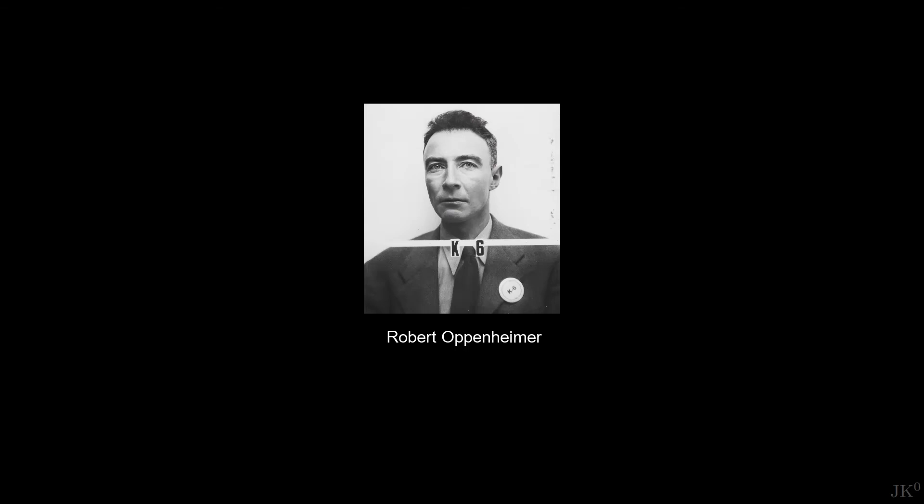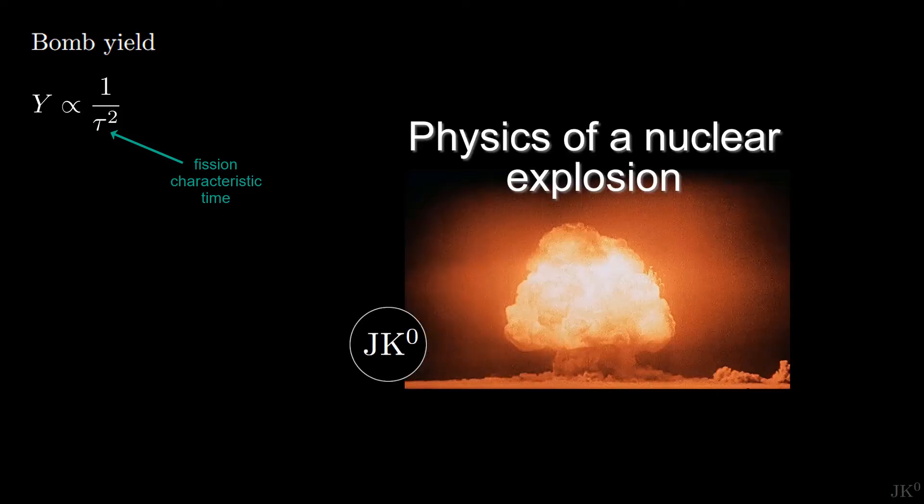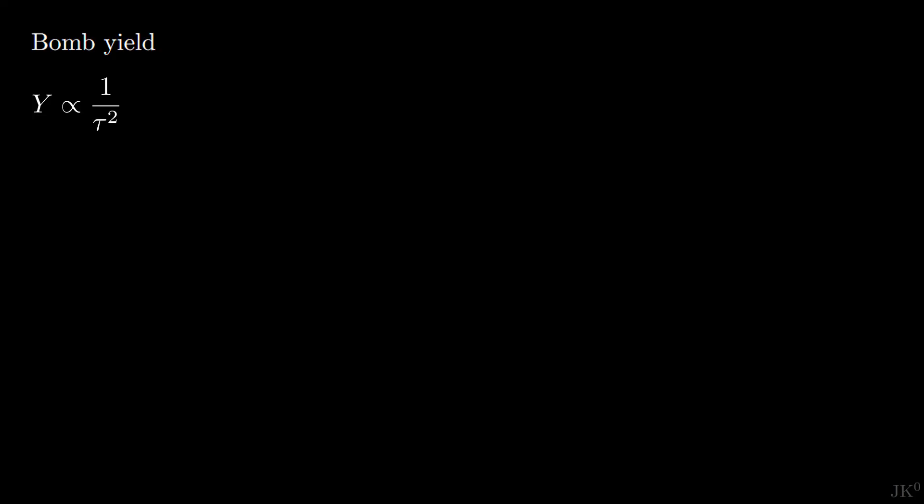In fact, Robert Oppenheimer proposed this idea in 1939, however, it was later shown that the yield of a bomb is inversely proportional to the square of the characteristic time between fissions. This is a quantity that was defined in the video about the physics of a nuclear explosion. When two quantities are inversely proportional, then their product is a constant. This means that the yield multiplied by the square of the characteristic time is equal to a number that does not depend on the speed of the neutrons.